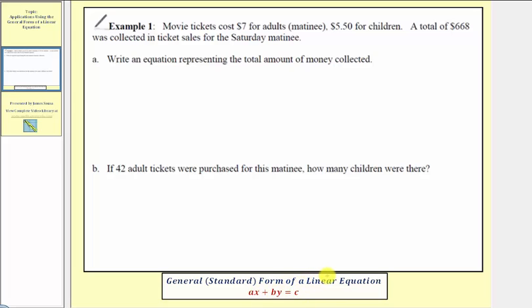For this example, movie tickets cost seven dollars for adults and five dollars fifty cents for children. A total of six hundred sixty-eight dollars was collected in ticket sales for the Saturday matinee. In part A, we're asked to write an equation representing the total amount of money collected. Let's highlight the important information: adult tickets cost seven dollars, children's tickets cost five dollars fifty cents, and a total of six hundred sixty-eight dollars was collected in ticket sales from the matinee.